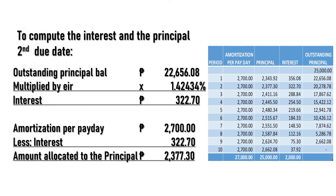For the second due date, the outstanding principal balance of 22,656.08 is multiplied by the effective interest rate of 1.42434%. The interest for the second due date is 322.70. Deducted from the amortization per payday of 2,700, the amount allocated to the principal is 2,377.30. Use the same procedure every payday to get the amount allocated to interest and principal.